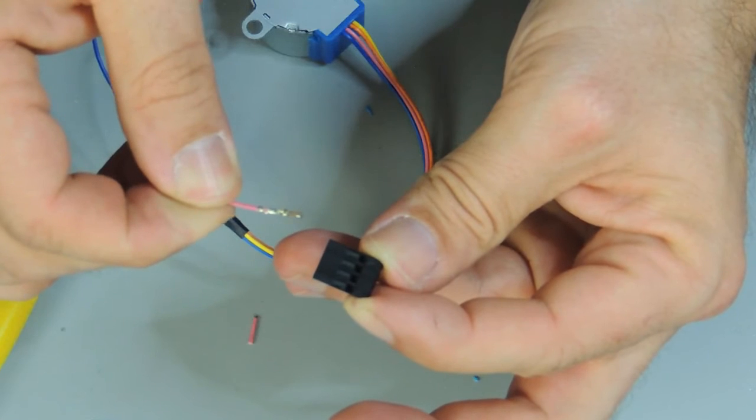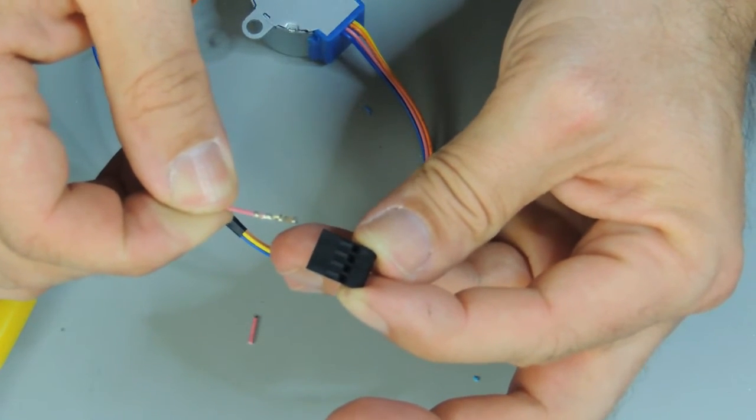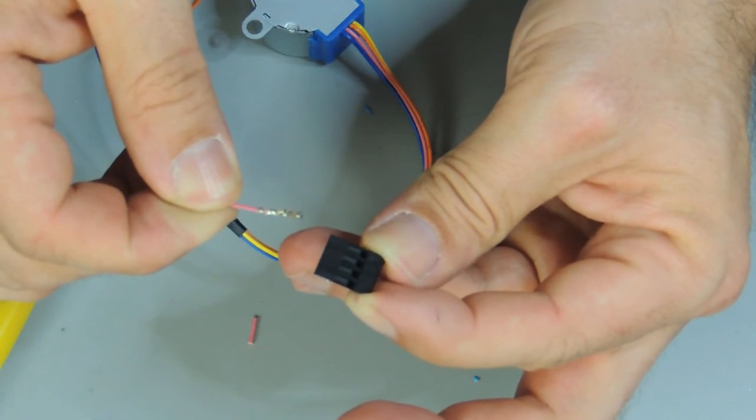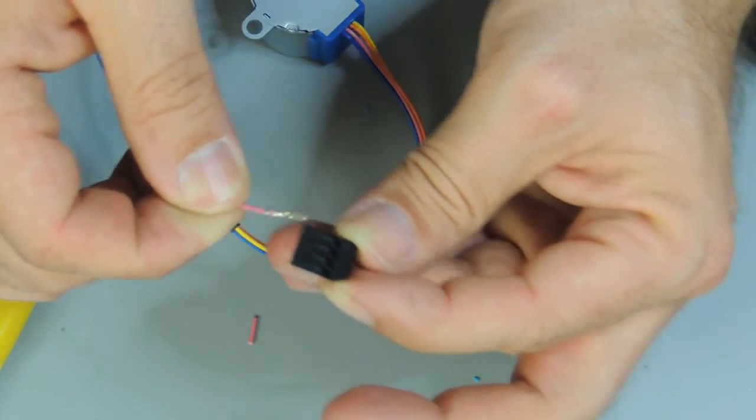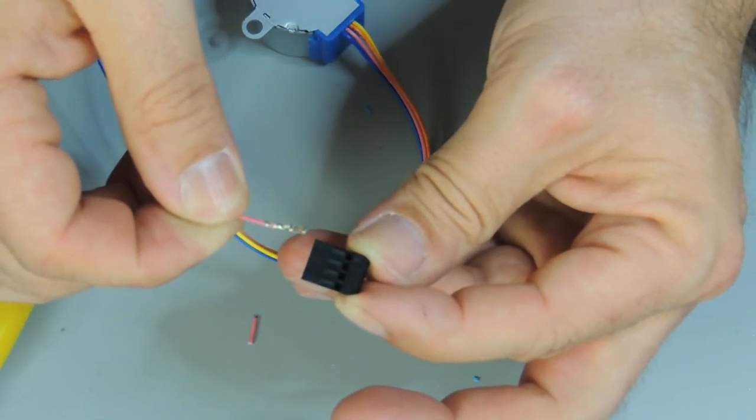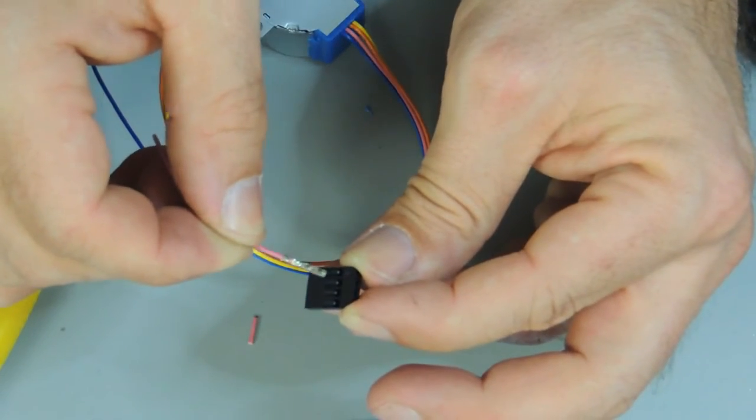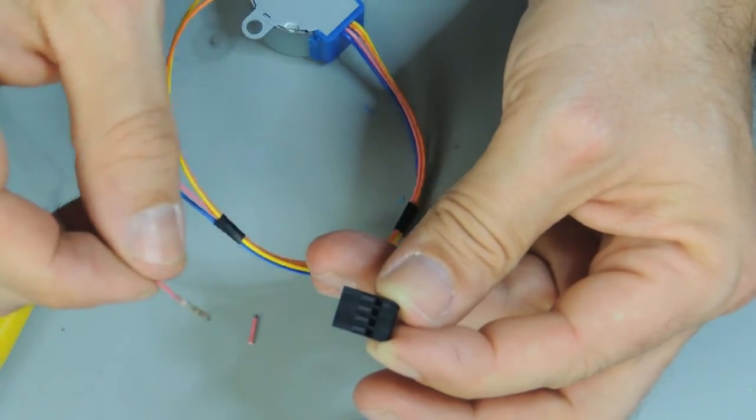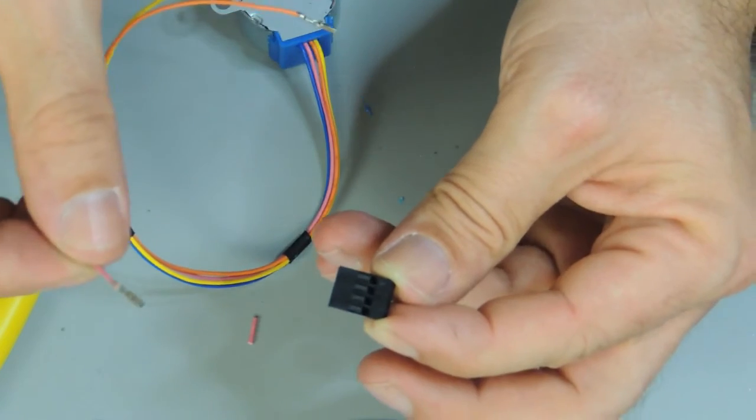When you apply it right, you must hear some clicking noise that gives you the indication that it has the right contact or it just fits in and gets held by these ledges here. So let's start with the first one.